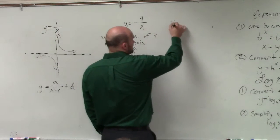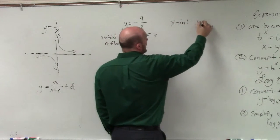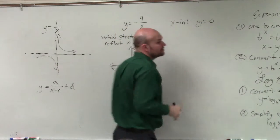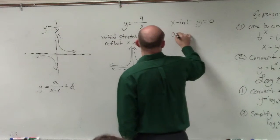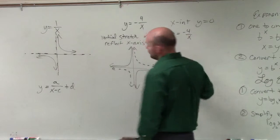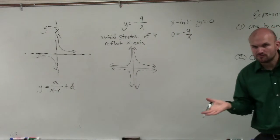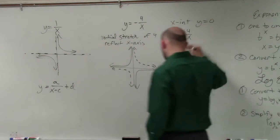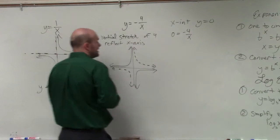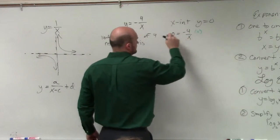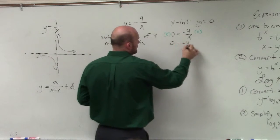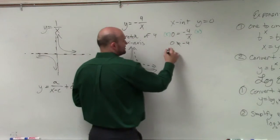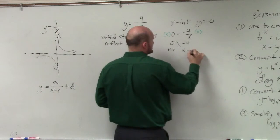To find the x-intercept, y is equal to 0. So I'm going to show you algebraically why we know there's no x-intercept. If you put 0 in for y, you get negative 4 over x. Well, we've got to solve for x to find the x-intercept. So you multiply by x on both sides. And what you get is 0 is equal to negative 4. Well, 0 does not equal negative 4. So therefore, there's no x-intercept.